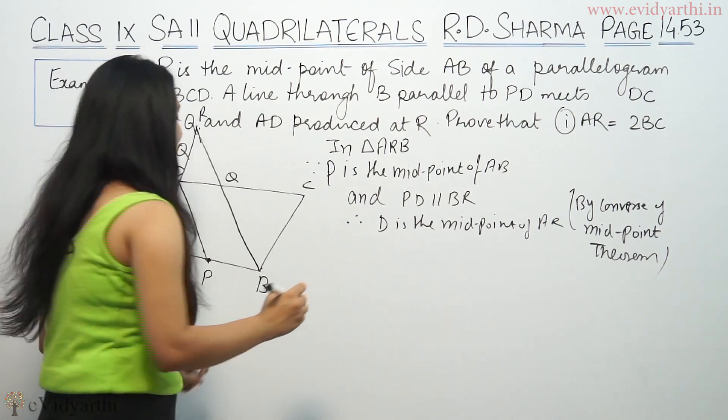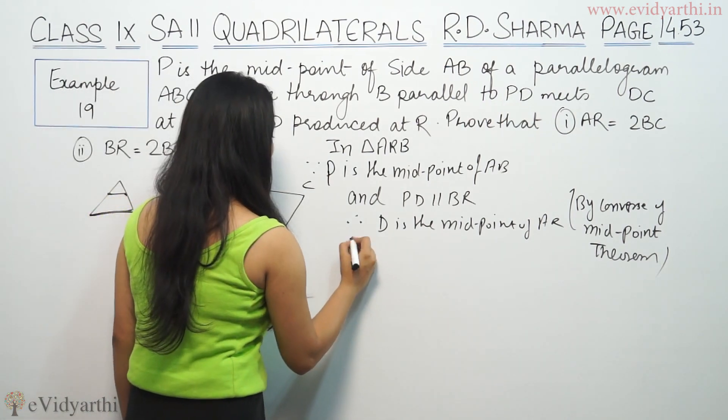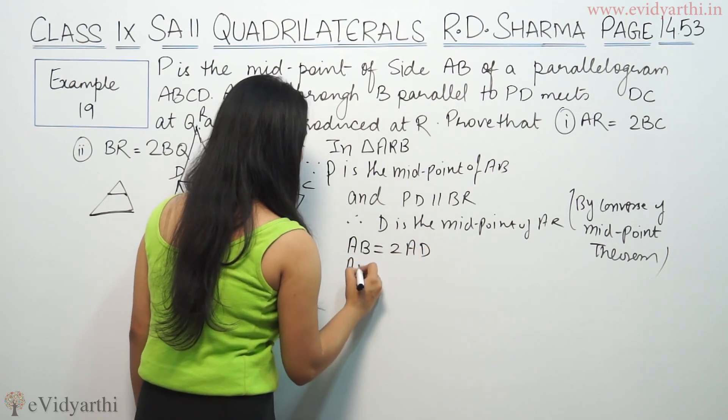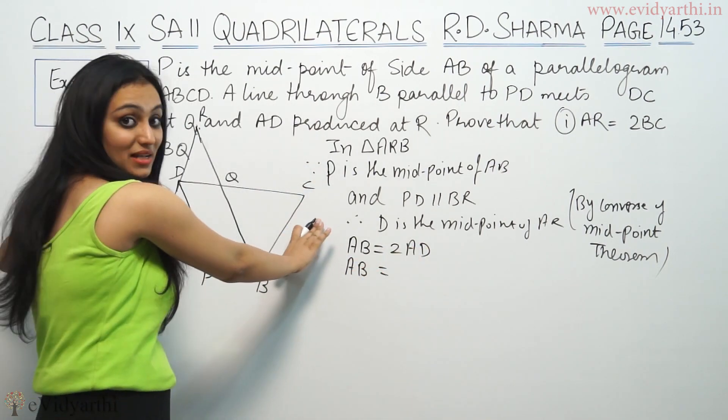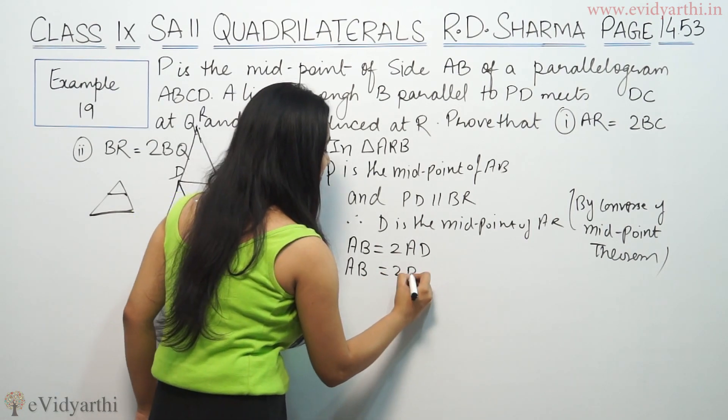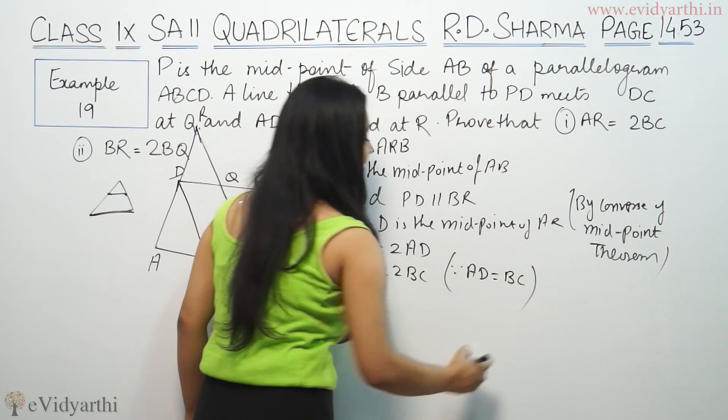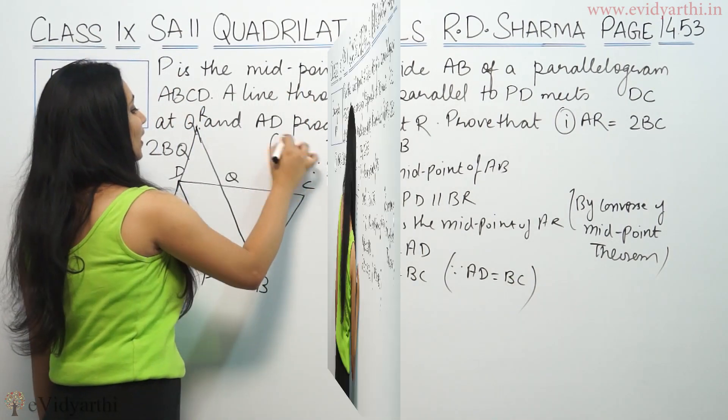This means that AR is equal to twice AD, and AD is equal to BC because this is a parallelogram. So we can write it as twice BC since AD equals BC. This was part one.